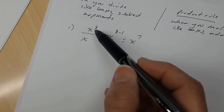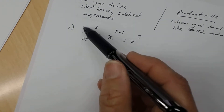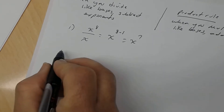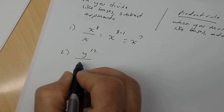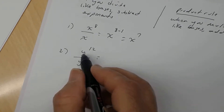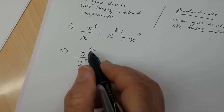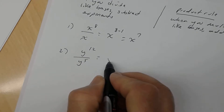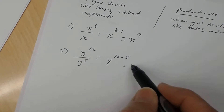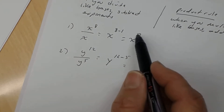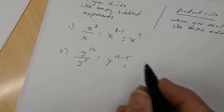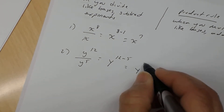Remember, you have 8 factors of x in the numerator and only 1 in the denominator, so you can divide out one and you're left with 7. Number 2: you have y to the 12th divided by y to the 5th. The base is y in both cases, so you subtract the exponents — y to the 12th subtract 5. Now in all of these cases the exponent you end up with will be positive; negative exponents will be a different lesson. So we get y to the 7th power.